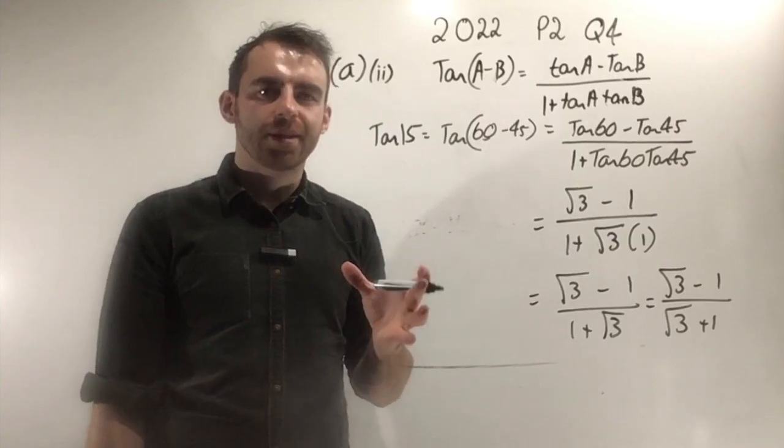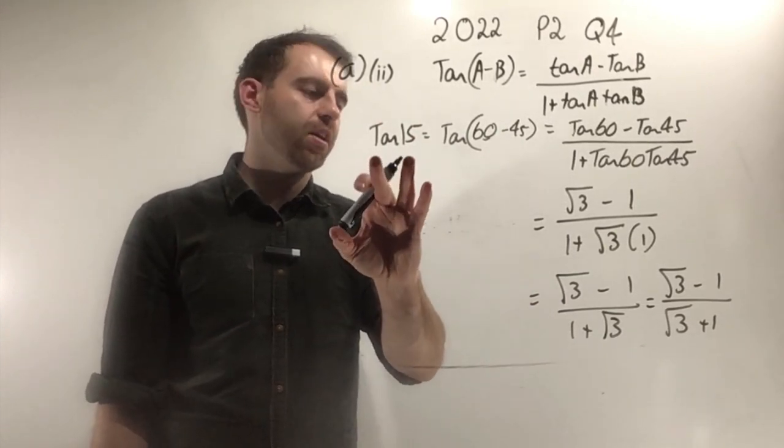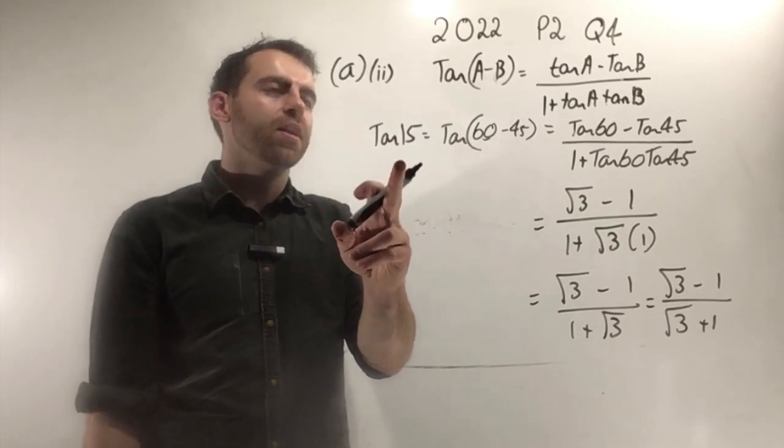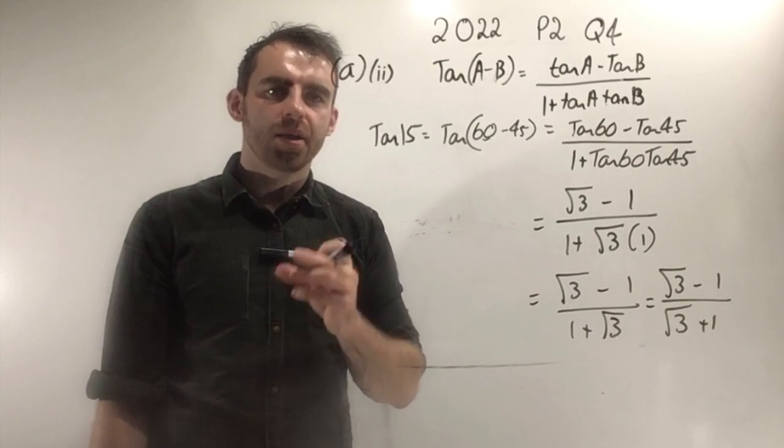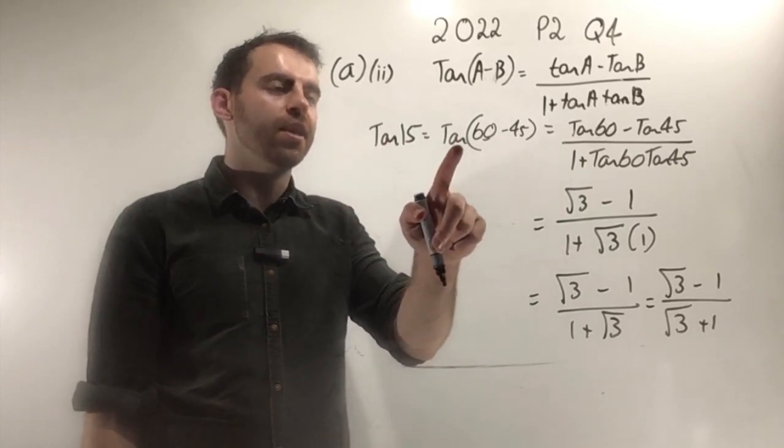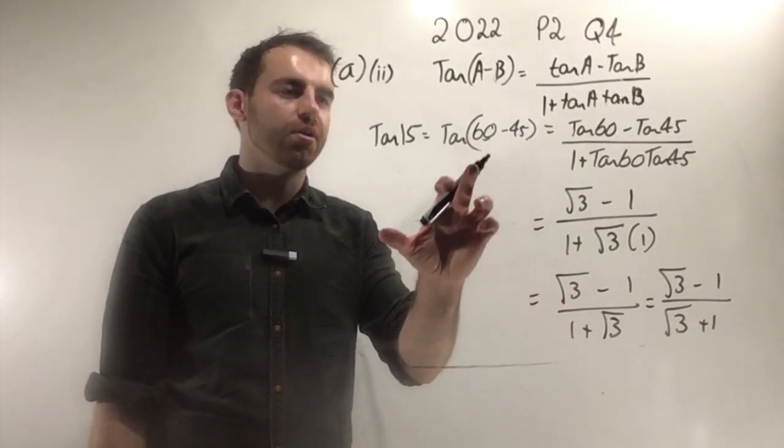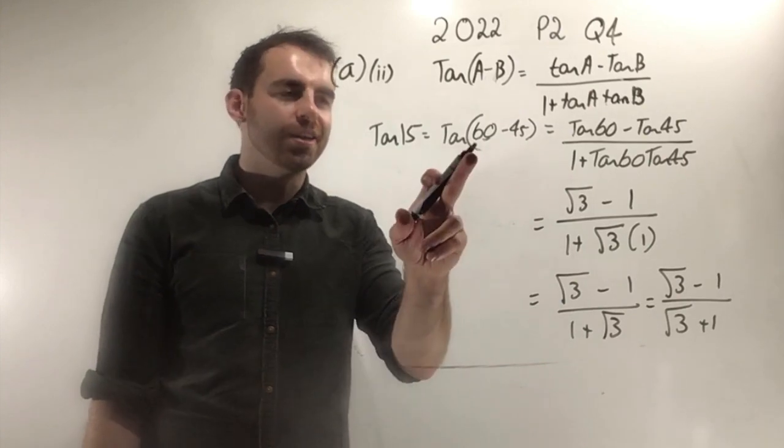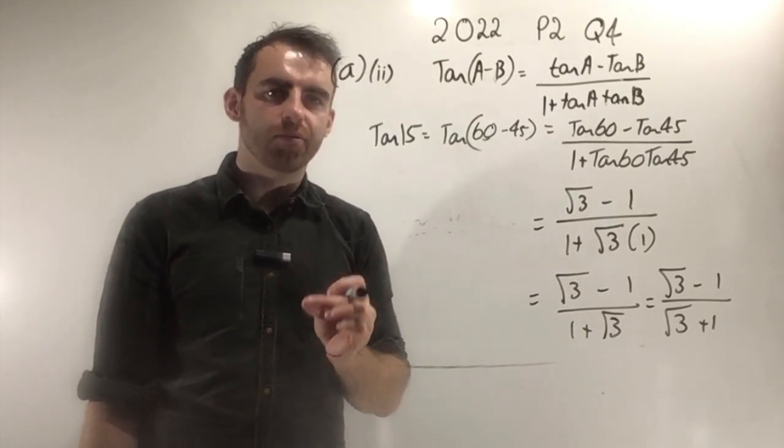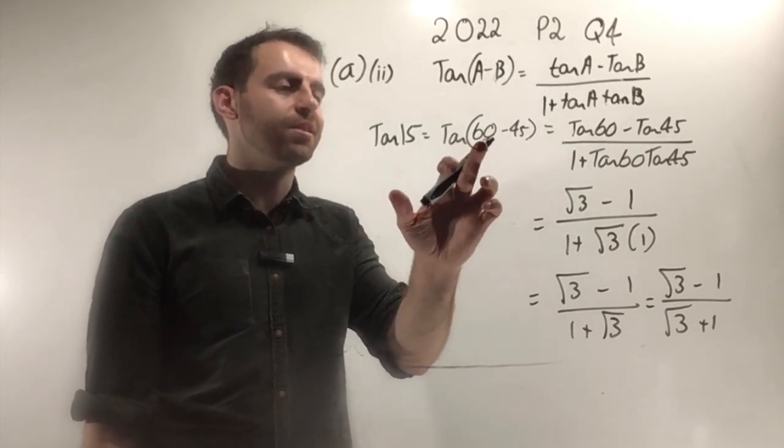You should make the link in A part II—it's directly related to A part I. We're asked to write tan 15 in the form root A minus 1 over root A plus 1. You should realize that tan 15 can be rewritten as one angle minus another. You want to use your special angles from page 13. You could rewrite tan 15 as tan 45 minus 30, or as tan 60 minus 45. It's way easier if you use 60 and 45, because tan of 60 is root 3 and tan of 45 is 1.